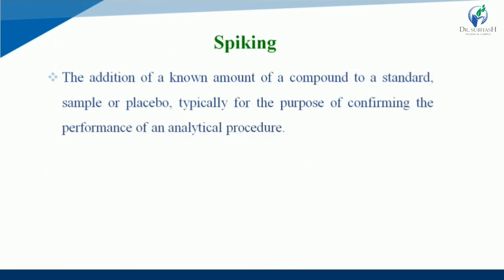Next is spiking. Spiking is the addition of a known amount of compound to a standard sample or placebo, typically for the purpose of confirming the performance of an analytical procedure. By adding a known compound to the standard sample, you can check the performance of the analytical procedure.